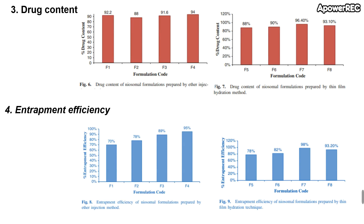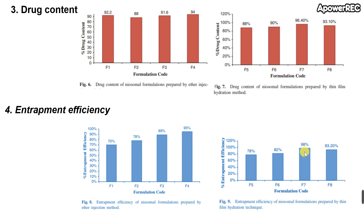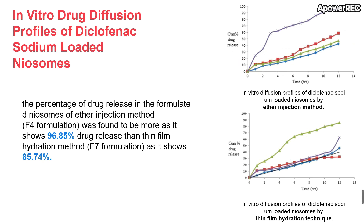For entrapment efficiency, F4 showed the highest value among formulations prepared by ether injection method. Among those prepared by thin film hydration, F7 showed the highest entrapment efficiency at 98%. Comparing the best formulations of both methods, F7 — containing Span 80 — had the highest entrapment efficiency at 98%.